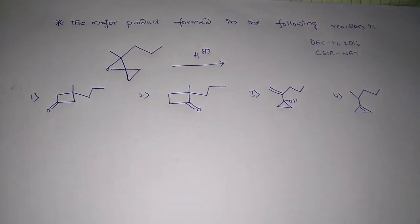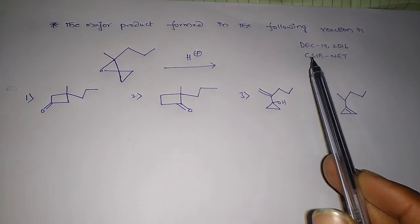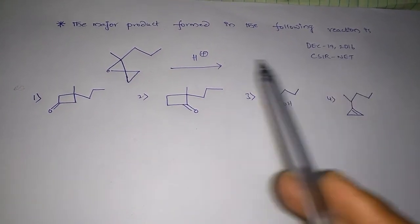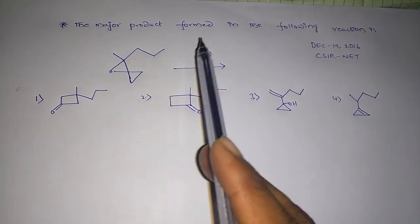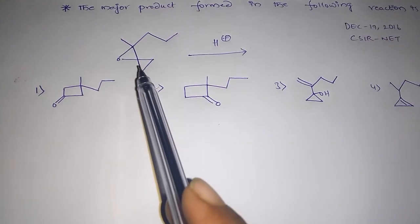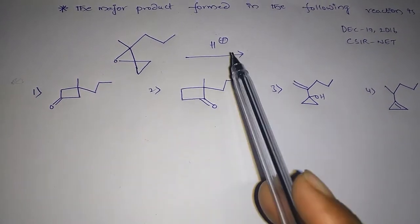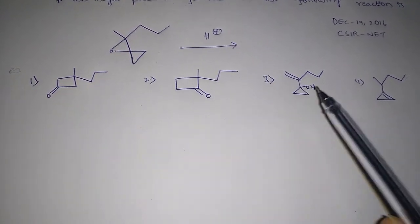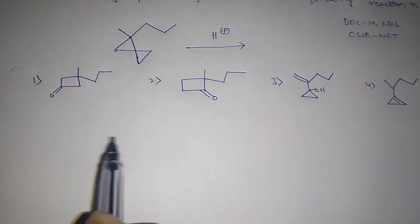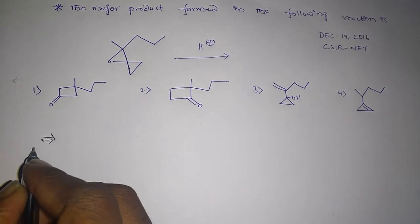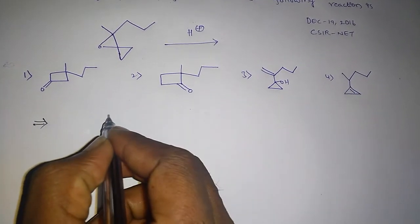Hi, this is Ranjivi. This question appeared in December 19, 2016 CSIR NET. The question is: the major product formed in the following reaction is... We have the reactant here. I done protonation, H plus. What will be the product in the given four choices?